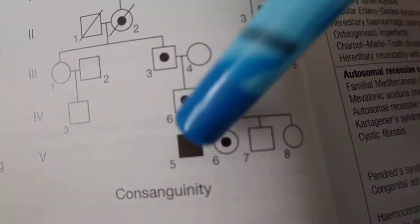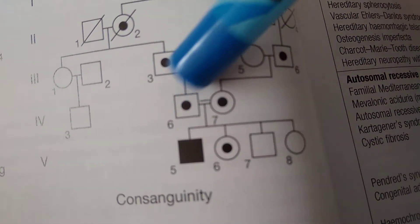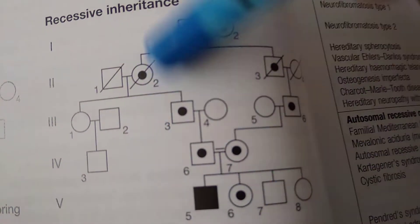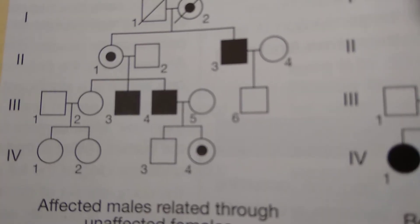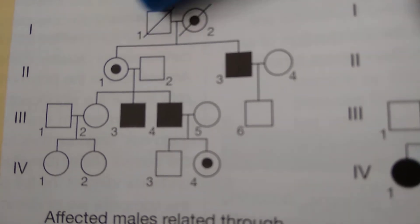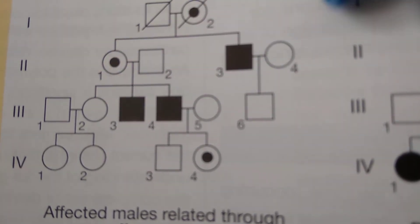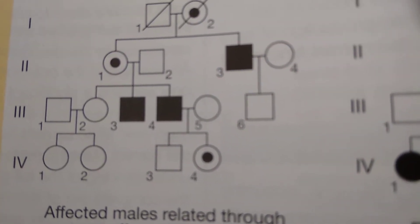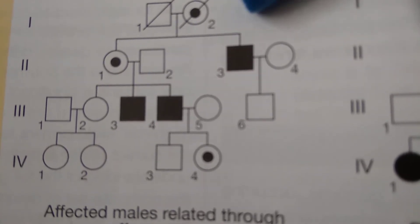So this is a recessive inheritance. I won't tell you what this is. Can you guess what this is? So carrier here, carrier, affected male. So something like a female, then a female carrier, affected male.